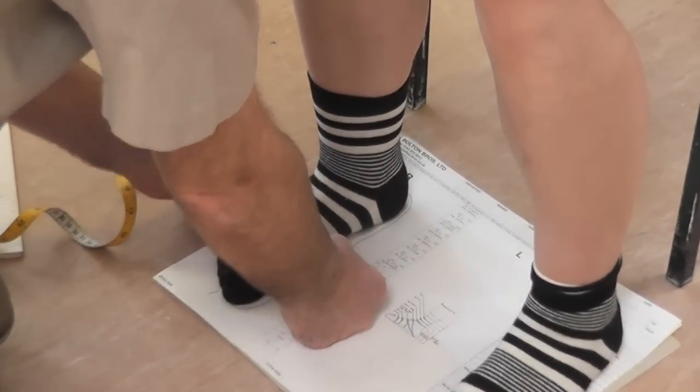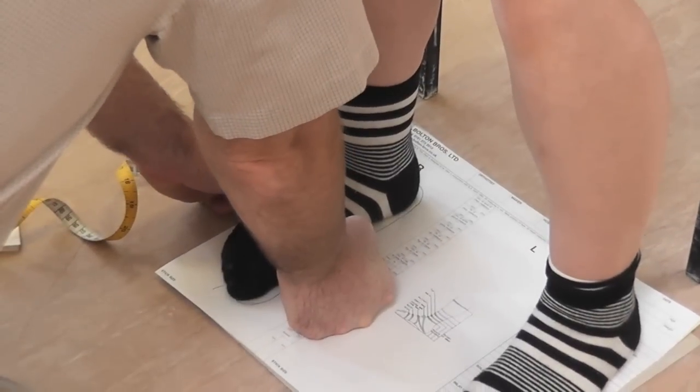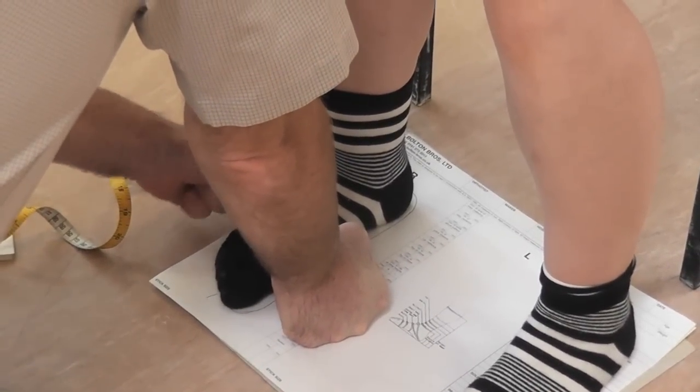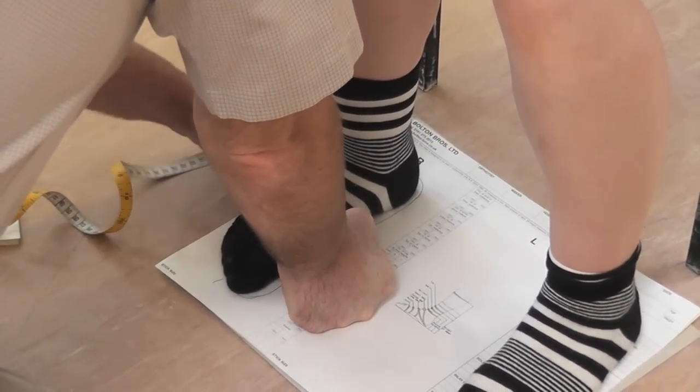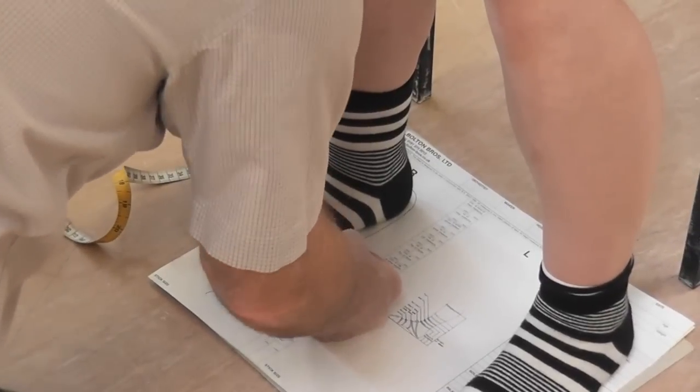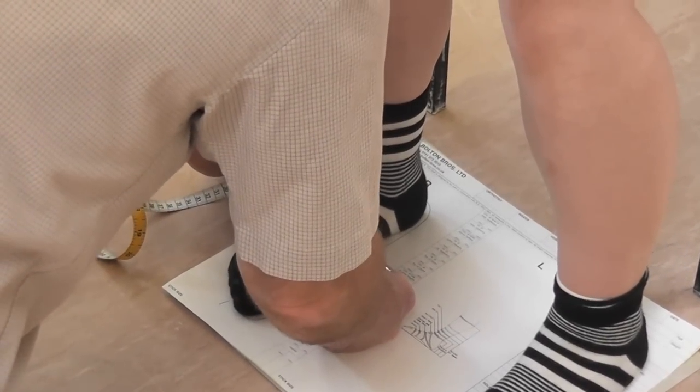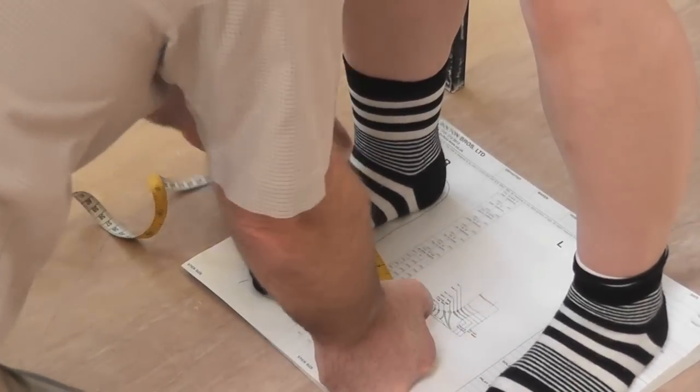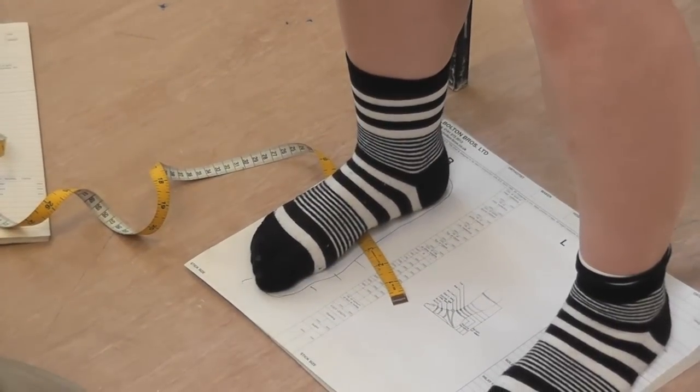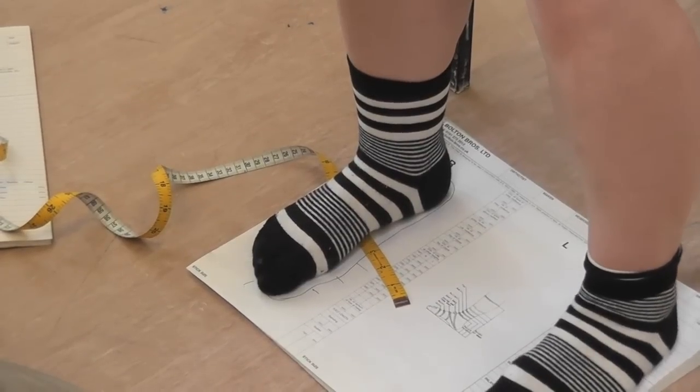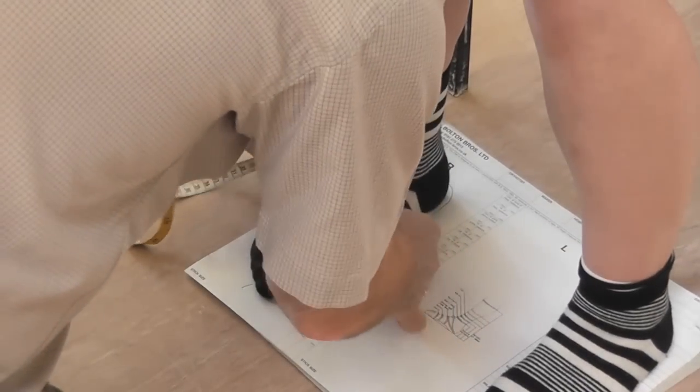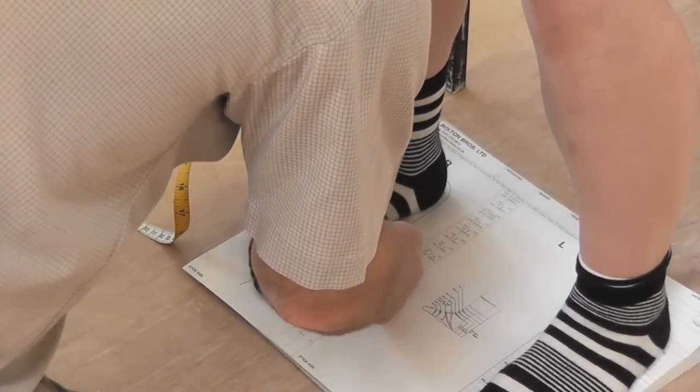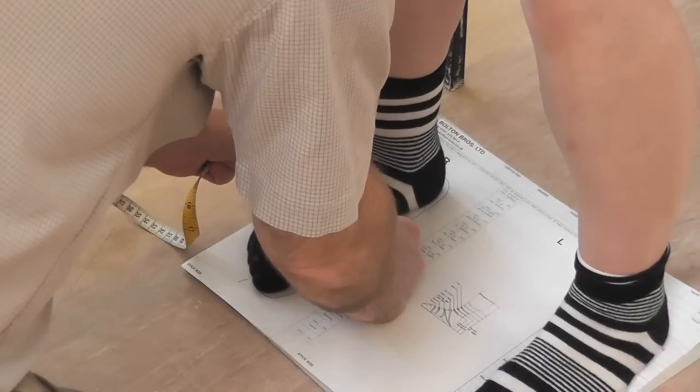And then to the instep. Now this is the one that most folk get wrong. Palpate for the base of the fifth metatarsal and make sure that the tape is on the distal side of the base of the fifth. Depending on your foot topography, if you've got a cavus or you've got a planus, the angle that you come forward will be between 8 and 10 degrees on the perpendicular.